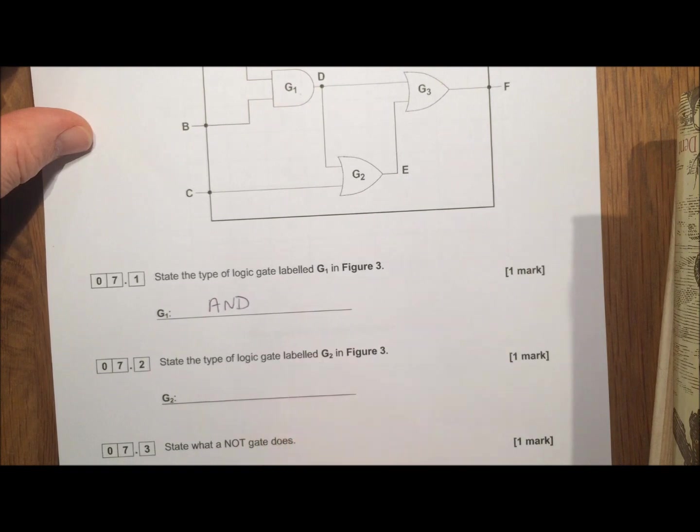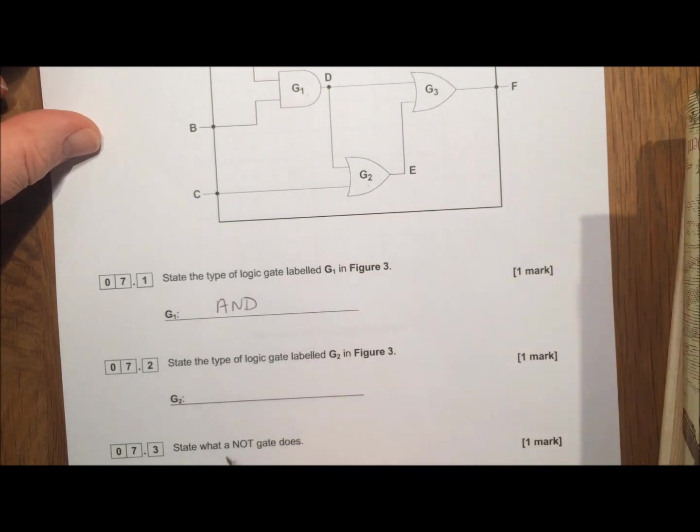State the type of logic gate labeled G2. This one, so we can just write down OR. That was easy enough.